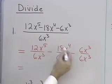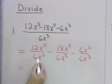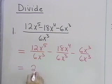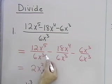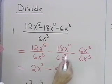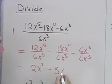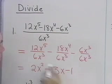Then it's just a matter of simplifying each term individually. 12x to the fifth over 6x cubed will be 2x to the second when I divide coefficients and subtract exponents. Minus 18 divided by 6 is 3. x to the fourth over x cubed is x. And then 6x cubed over 6x cubed, that will be 1.